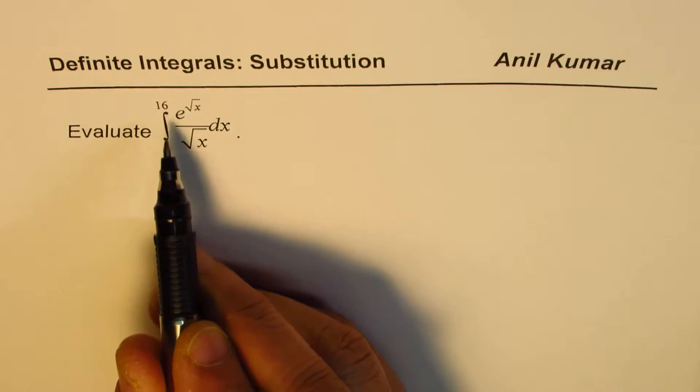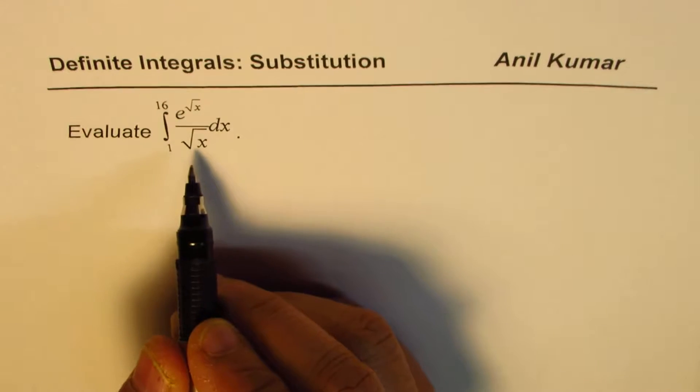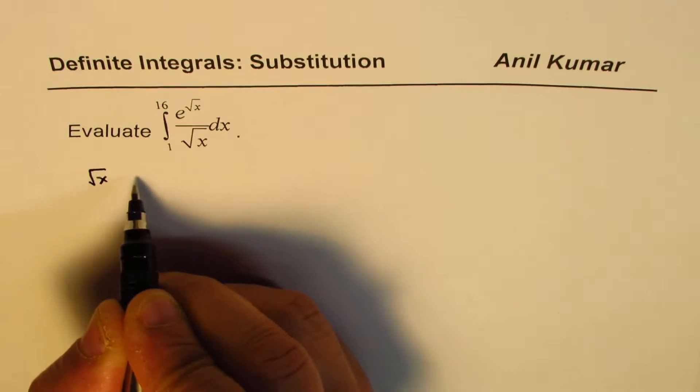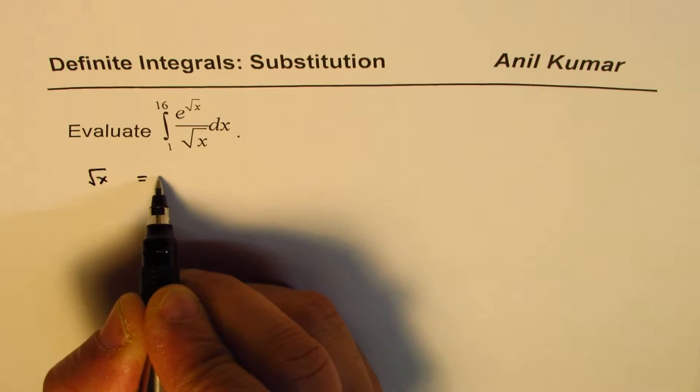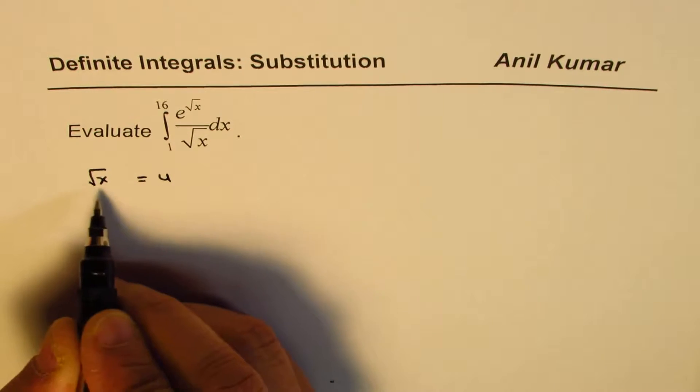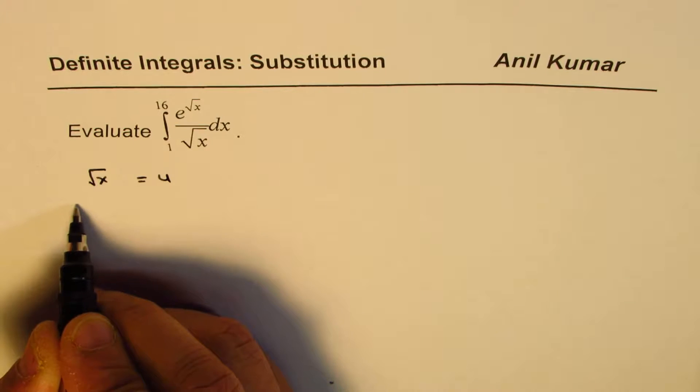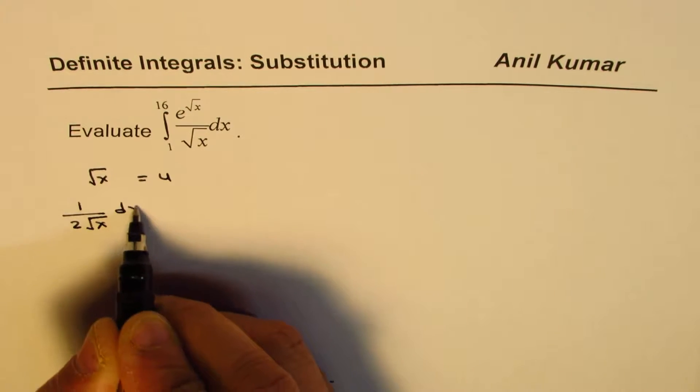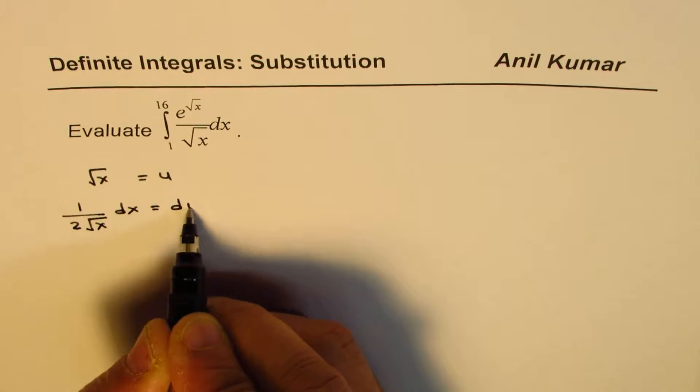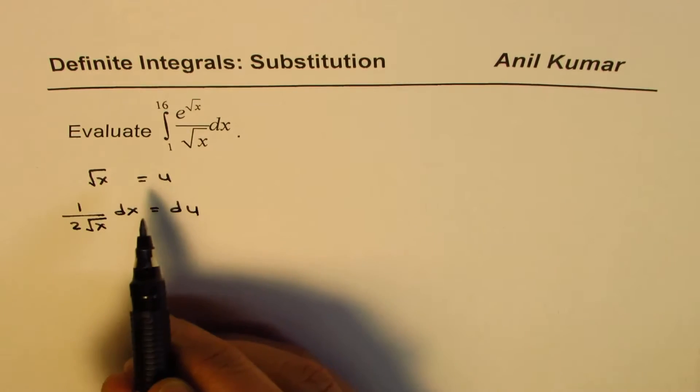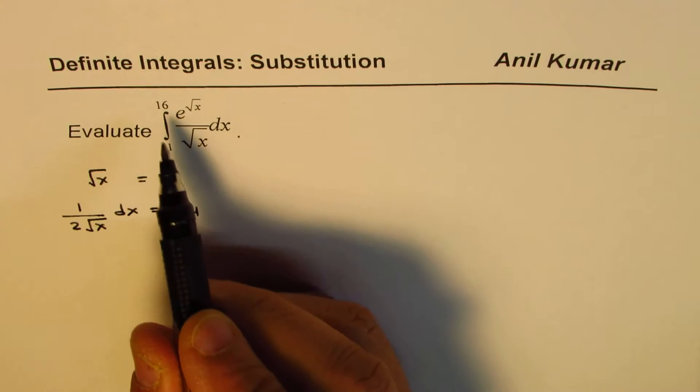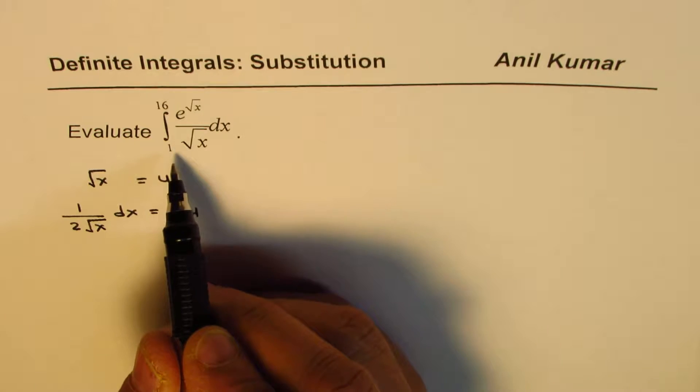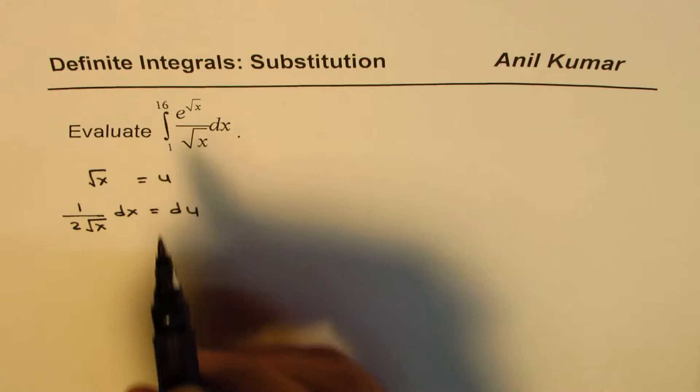So we can substitute square root of x as equals to u. In this case, the derivative will be 1 over 2 square root of x dx equals du. Now whenever you change the variable in definite integrals, the limits also change.